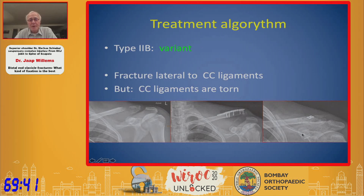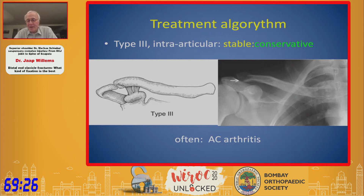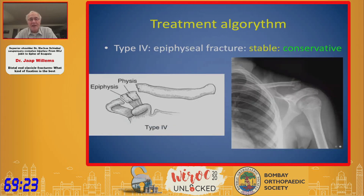You should be aware that in some cases type 2 has a variant with torn CC ligaments. Type 3 is an intra-articular fracture — it is stable and you can treat it conservatively. It might lead to early AC arthritis, but that is not always clinically significant.